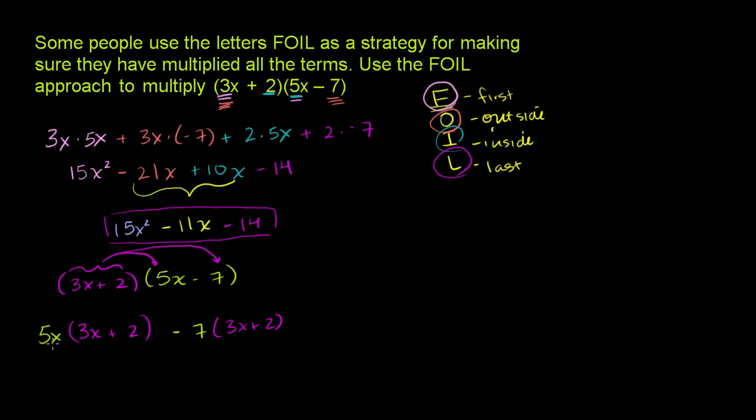Now, again, we can apply the distributive property to get 5x times 3x plus 5x times 2. Just doing the distributive property on this.